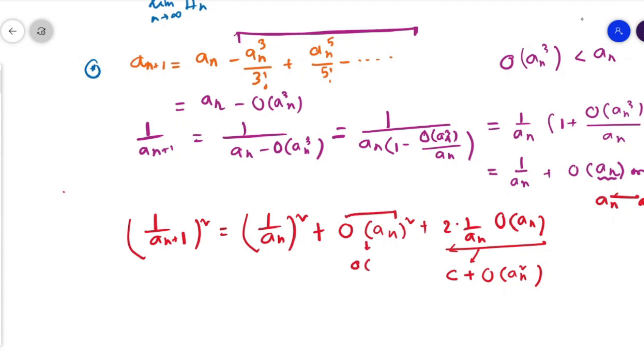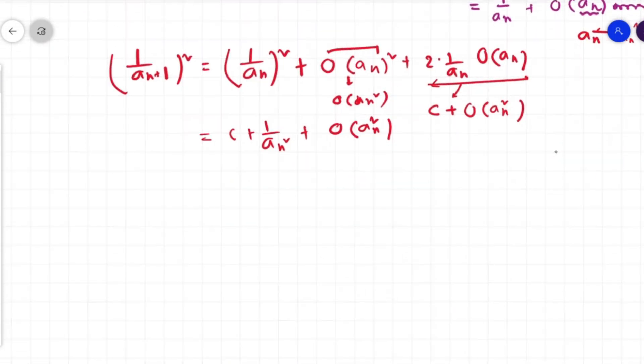This can be simply written as (1/a_{n+1})² = c·(1/a_n)² + O(a_n²). From here we can write this whole thing as c + 1/n² + O(n²). And then we can notice that (1/a_n)² = c + O(n²).